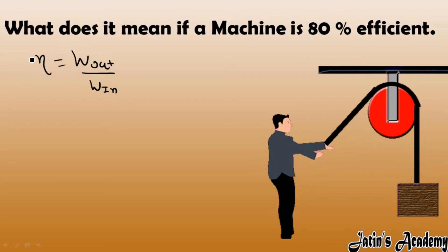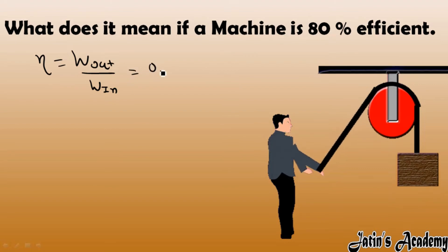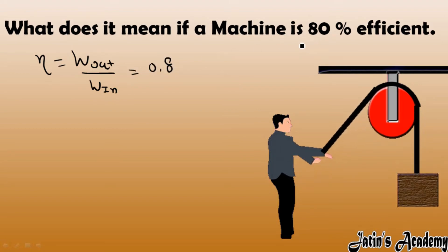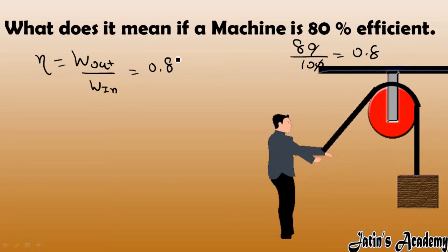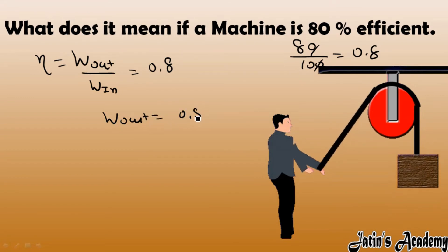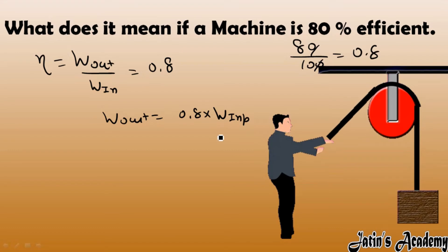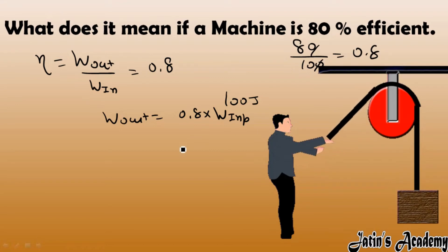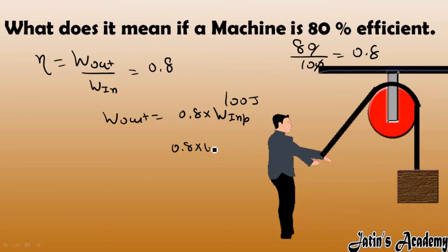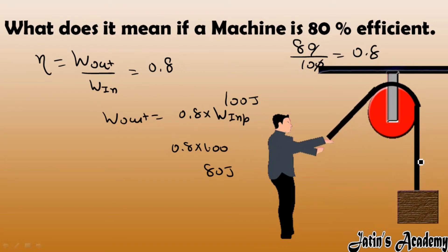If this machine is 80% efficient, it means 0.8 (80% means 80 by 100). Work output is 0.8 into work input. This means if you are giving 100 joule of work to a machine, then you will get only 80 joule of work at the load point.